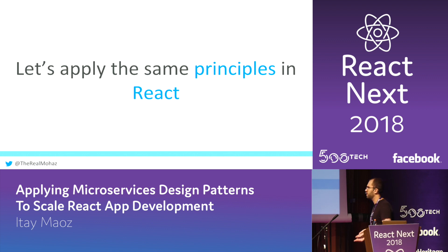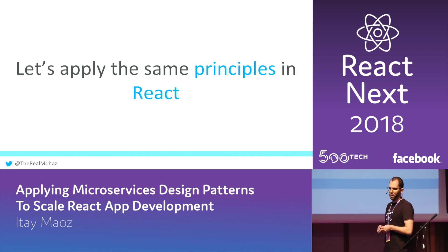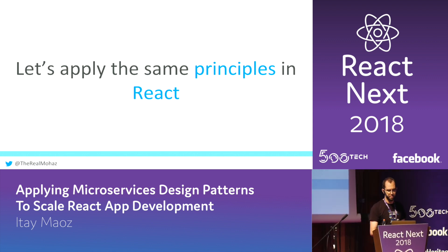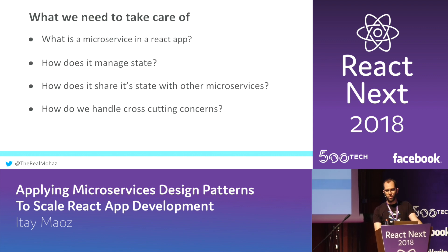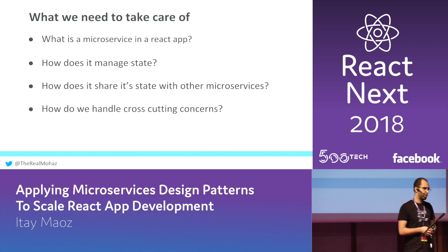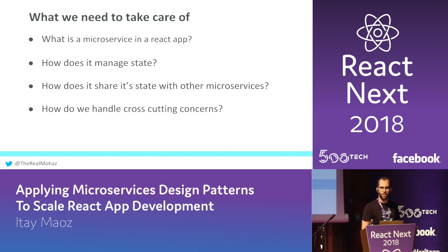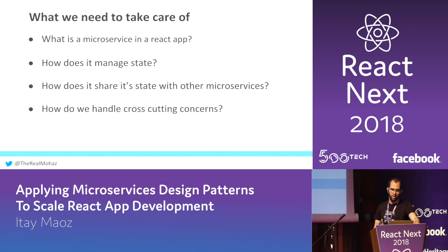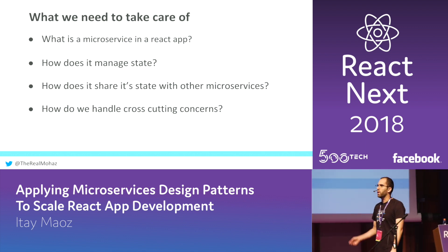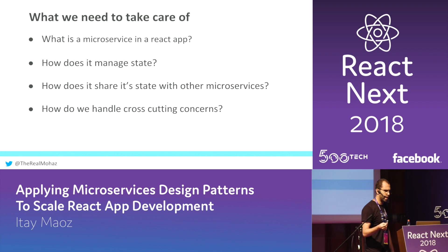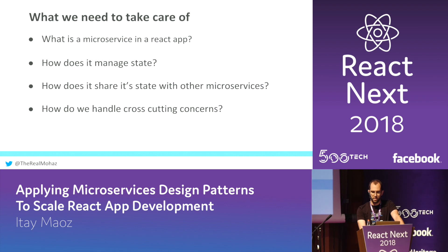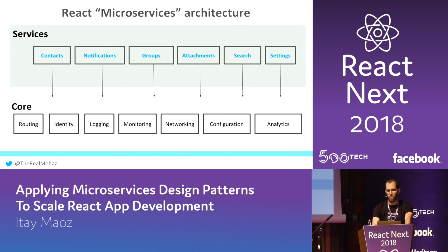So we thought, let's try to apply the same principle for React apps — if the problems are the same, maybe the solution can be the same. We needed to answer a few questions: what exactly is a microservice in a React app? Once we identify that, how are we going to manage its state and share it with the rest of the app? And who handles cross-cutting concerns like logging, monitoring, routing, identity, etc.? So I'm going to suggest the following architecture.